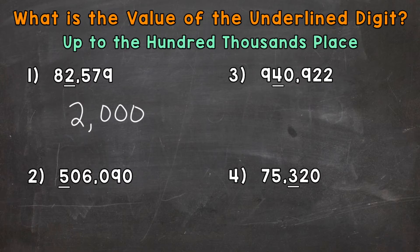On to number two, where we have 506,090. Now the five in the hundred thousands place is underlined. So that five represents five groups of 100,000. So the value of that five is 500,000, because it's in the hundred thousands place.